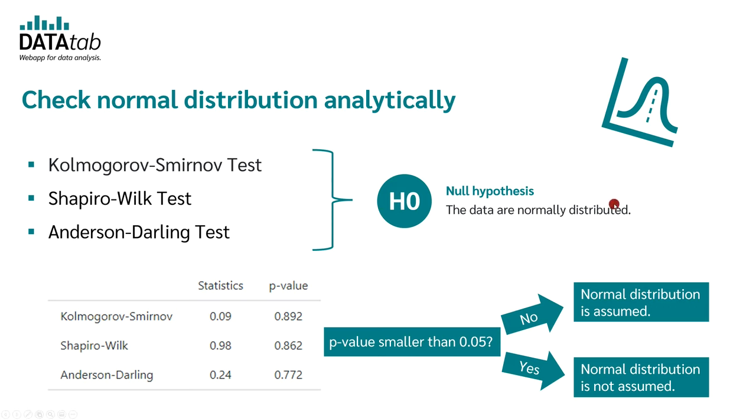So in summary, all these tests give you a p-value. If this p-value is less than 0.05, you assume no normal distribution. If it is greater than 0.05, you assume normal distribution.